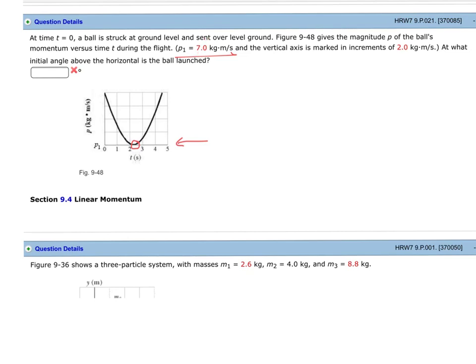Now this is a projectile, and the momentum at this point is in that direction, and we're looking for that angle. We know at the top that the object is still moving in the horizontal direction, and that is where it has the least amount of momentum.